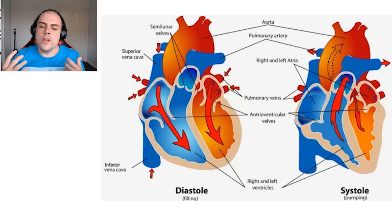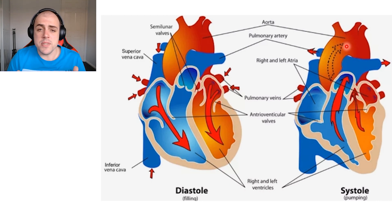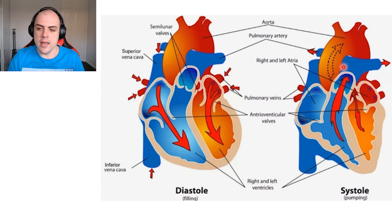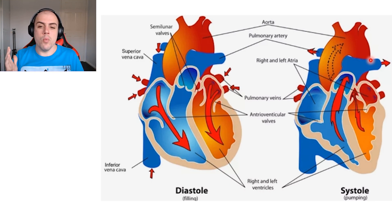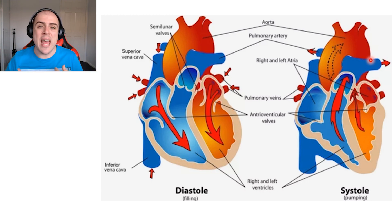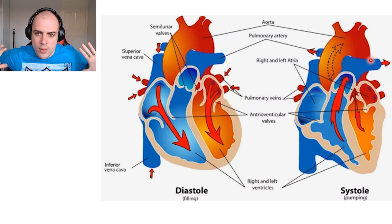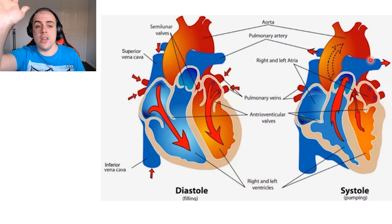Afterload describes the amount of pressure inside the vessels — the pulmonary trunk or the aorta — as blood is leaving the heart. These vessels already have blood in them, so if someone has very high blood pressure, there is a lot of pressure inside, meaning the heart must squeeze even harder to push blood through. Another component is blood viscosity — if your blood were as thick as honey, the heart would have to work far harder to push it through.